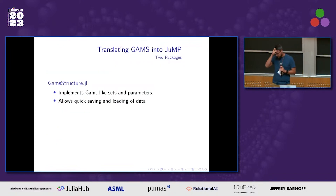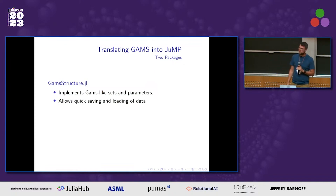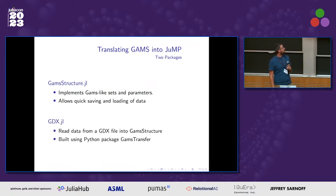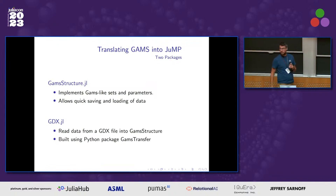To ease the transition for people that use GAMS quite a bit, I've created a package called GamStructure. It implements GAMS-like sets and parameters, mainly on the data side of things, and you can also save and load these things quickly. We typically have around a hundred parameters and dump those into CSVs and load them in very quickly. I've also created a package called gdx.jl, which loads a GDX file into Julia directly. This uses a Python package called GAMS Transfer — actually created by the person who used to have my job at WinDC before GAMS hired him.